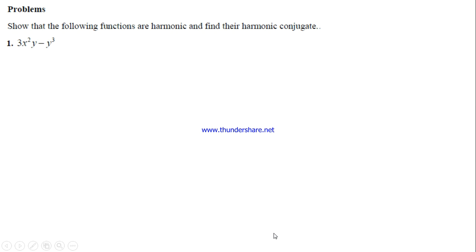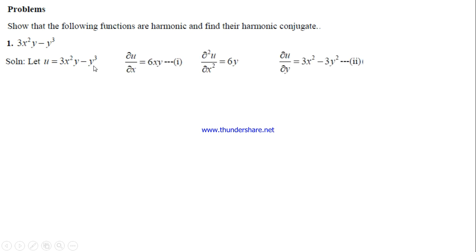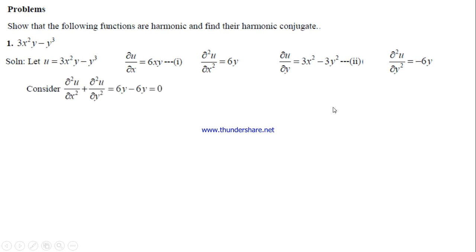Example: Show that u = 3x²y - y³ is harmonic and find its harmonic conjugate. We find ∂u/∂x = 6xy, ∂²u/∂x² = 6y, ∂u/∂y = 3x² - 3y², and ∂²u/∂y² = -6y. To prove the function is harmonic, we check: ∂²u/∂x² + ∂²u/∂y² = 6y - 6y = 0. The Laplace equation is satisfied, so the function is harmonic.